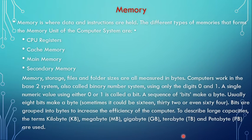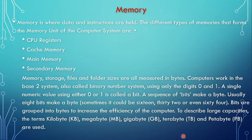What is memory? Memory is a place where you hold the data. Suppose you want to capture an image — you need some memory to store that data. Types of memory include CPU register, cache memory, main memory, and secondary memory. Memory, storage, files, and folder sizes are all measured in bytes. Computers work in the base-2 system called binary, using only digits zero and one, where zero means low signal and one means high signal. A single numeric value using either zero or one is called a bit.